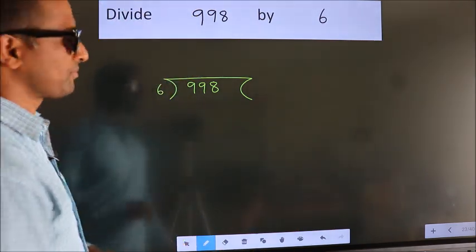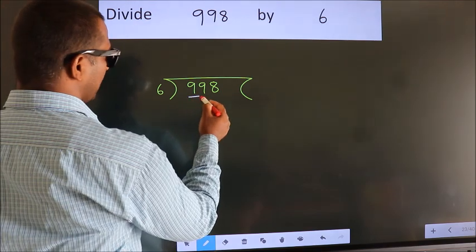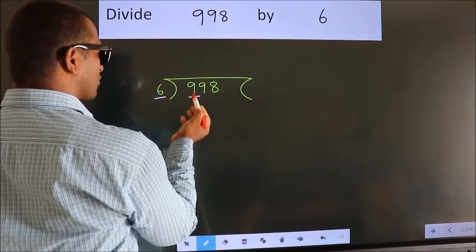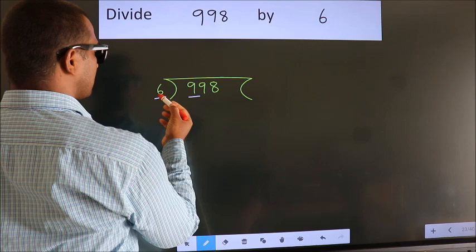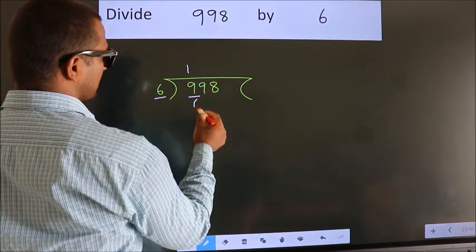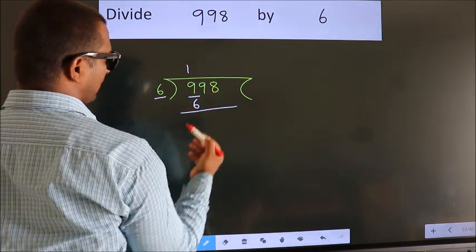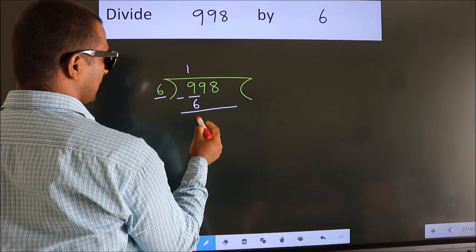Next, here we have 9, here 6. A number close to 9 in the 6 table is 6—1 times 6. Now we should subtract. We get 3.